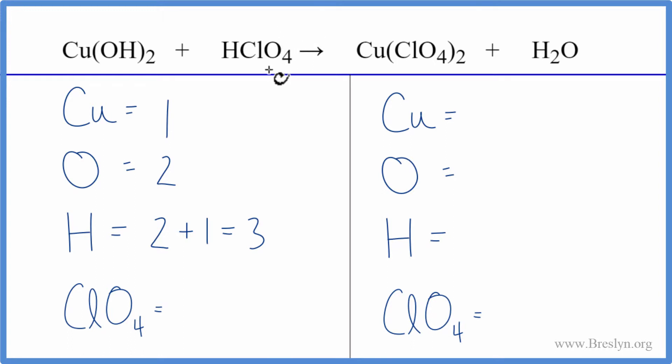On the product side we have one copper, one oxygen, two hydrogens, and then one perchlorate ion ClO4 times the two, so I have two of these ClO4 ions.